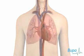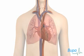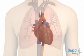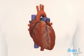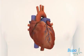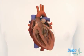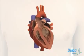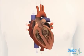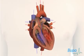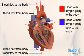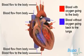Your heart is a muscular organ which lies in the centre of your chest. It pumps blood containing oxygen from the lungs to the body, and passes blood without oxygen back to the lungs to absorb more oxygen.